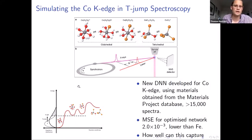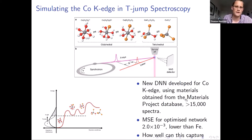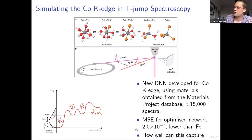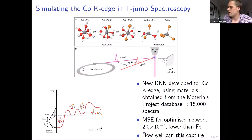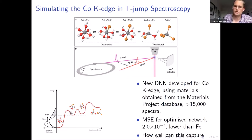The cobalt network was set up exactly the same way as for iron. The Materials Project database had just over 15,000 cobalt structures. From those, they achieved a mean squared error of 2×10⁻³, which is lower than for iron — a good starting point. The question is how well this can actually capture the changes seen in experiment.